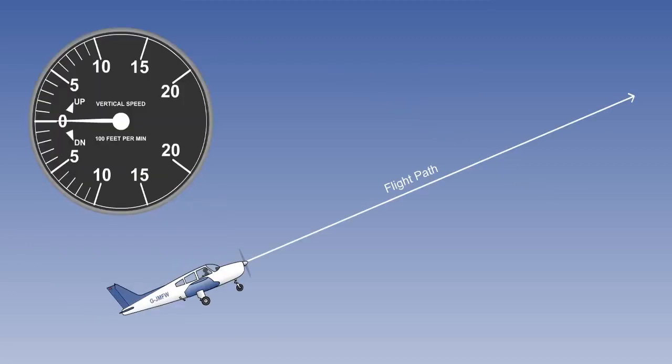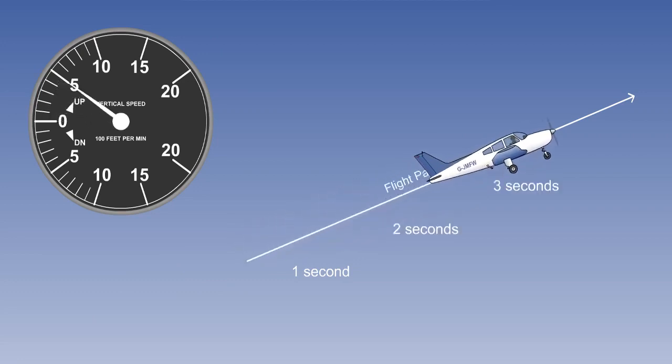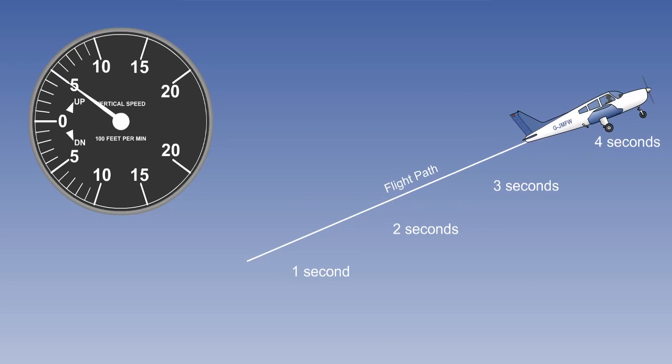The final error to consider is time lag. If we think about how the VSI operates, it can be seen that it will take a few seconds for the pressure differential to become established in the climb or descent. There will also be a time lag on leveling out, while the pressures in the capsule and the instrument case equalize. This error is most noticeable after a prolonged climb or descent, especially at a high rate.